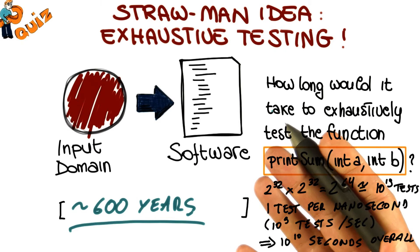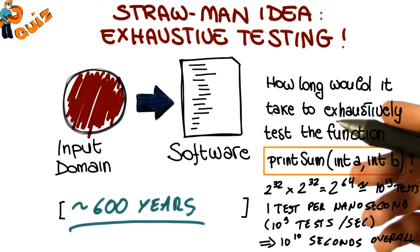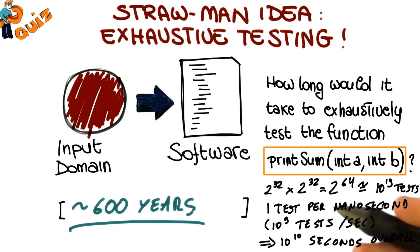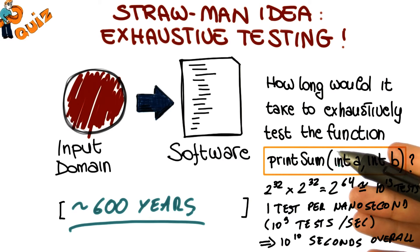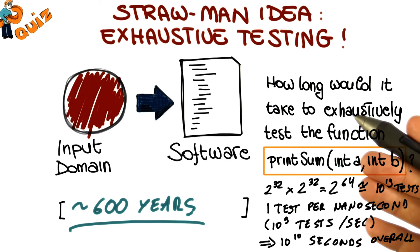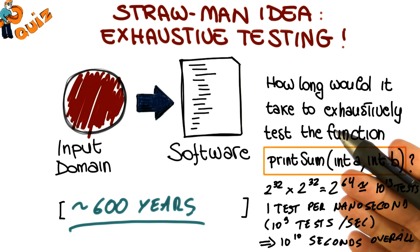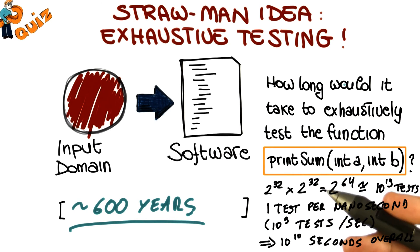So even for such a simple program — a program that takes two integers and adds them — it will take more than 500 years to test it exhaustively. The bottom line is that we just can't do exhaustive testing.